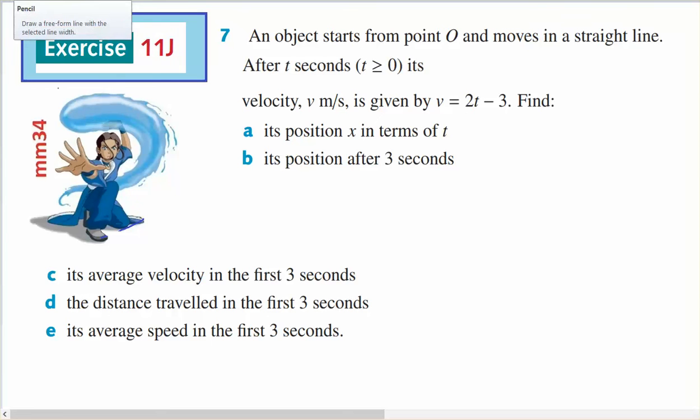This is for Year 12 Methods. It comes out of Exercise 11j, question number 7. An object starts at the origin and moves in a straight line, and is given by this particular velocity rule.